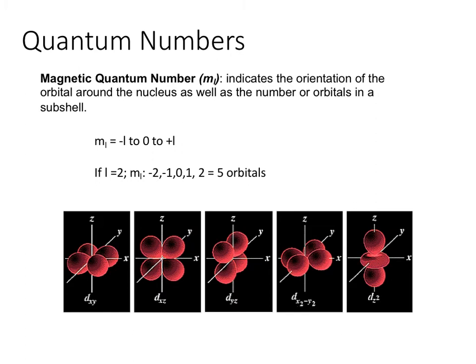Those five M sub L values correspond to five different D orbitals, each with a different orientation around the X, Y, Z axes. You can see all five orbitals pictured here, each with different directionality. Each number is a separate solution, even if the same value like 0 appears in multiple subshells.